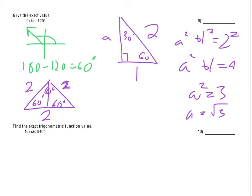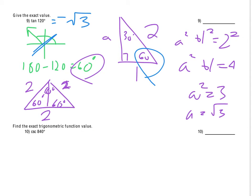With the 30-60-90 triangle established and the reference angle being 60 degrees, tangent is opposite over adjacent — so that's the square root of 3 over 1, giving square root of 3. However, we are in the second quadrant, where tangent and cotangent are positive only in the first and third quadrants. So tangent is negative in the second quadrant. The reasoning: tangent of theta is y over x, and in the second quadrant x is negative and y is positive, so we get negative square root of 3.